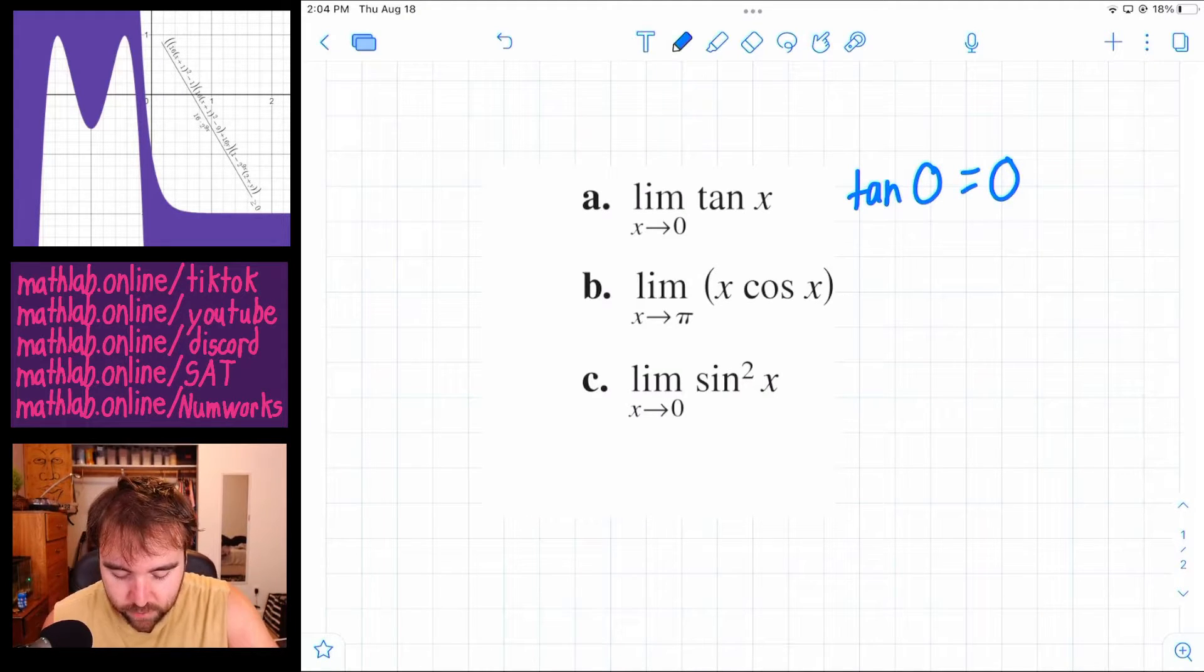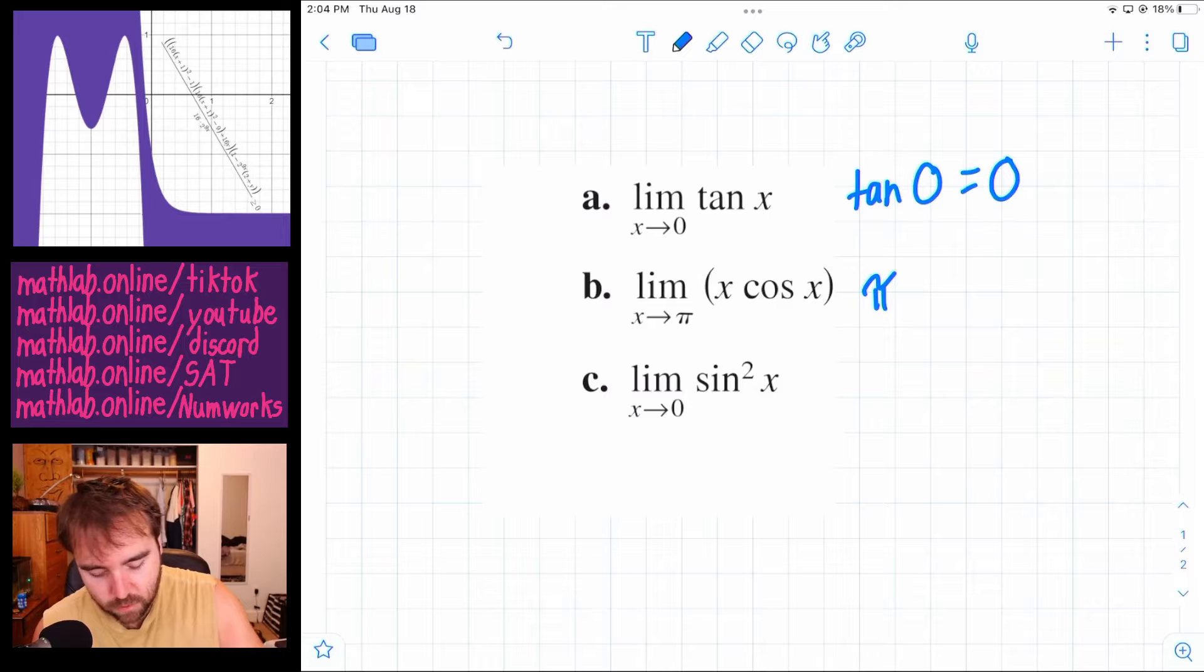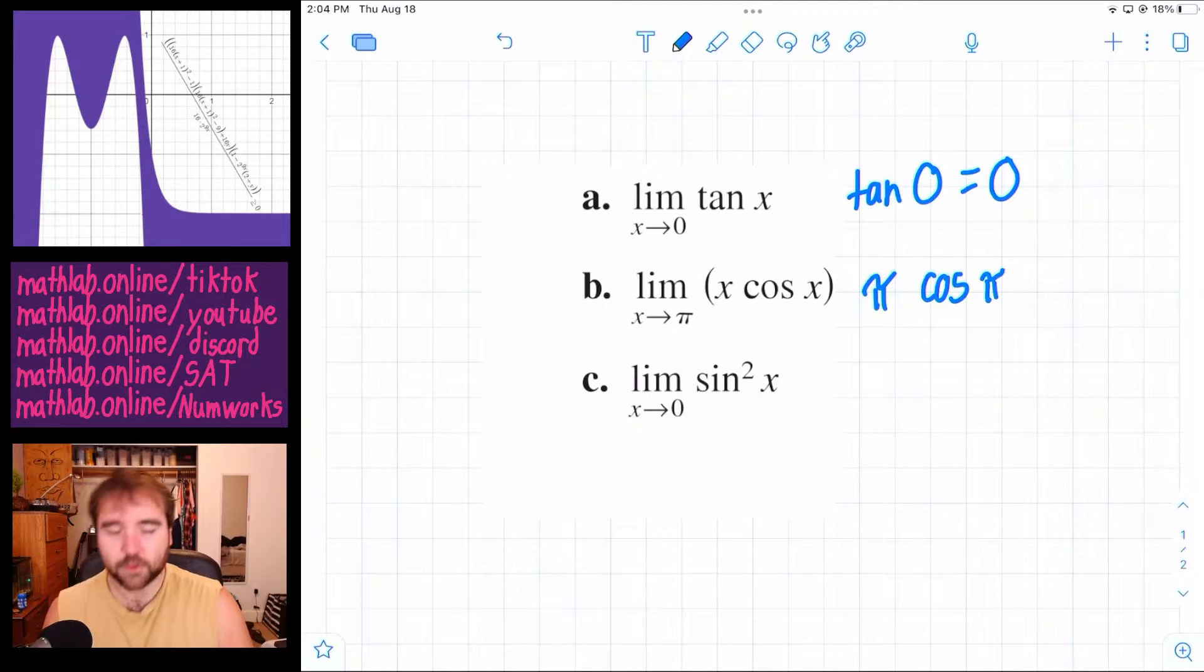We're going to do the same thing here. We're going to do pi times the cosine of pi. What is the cosine of pi?